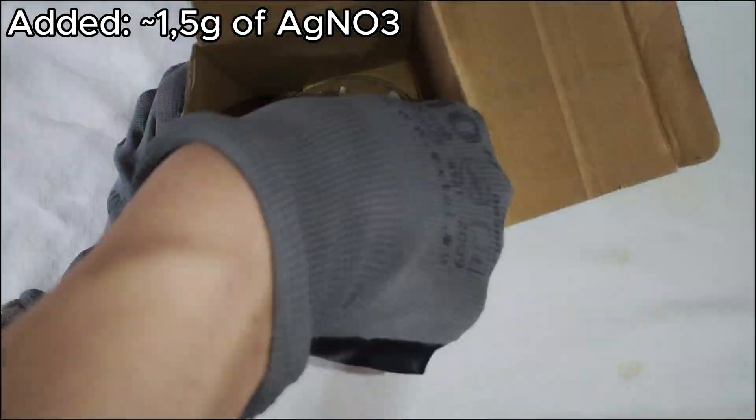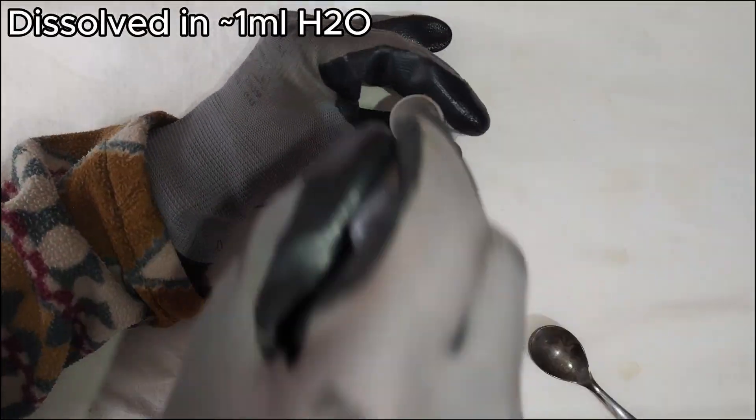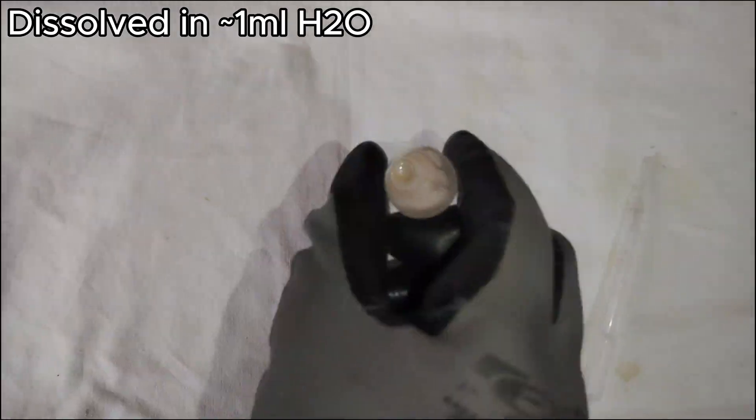We add 1.5 grams of crystalline silver nitrate to the mixture and then we dissolve it in 1 milliliter of distilled water.